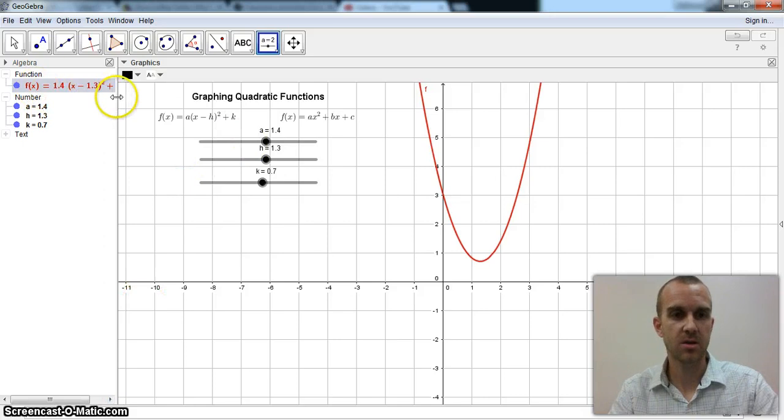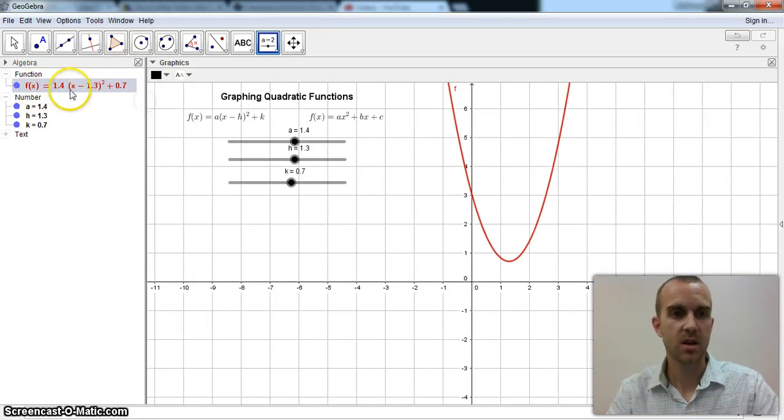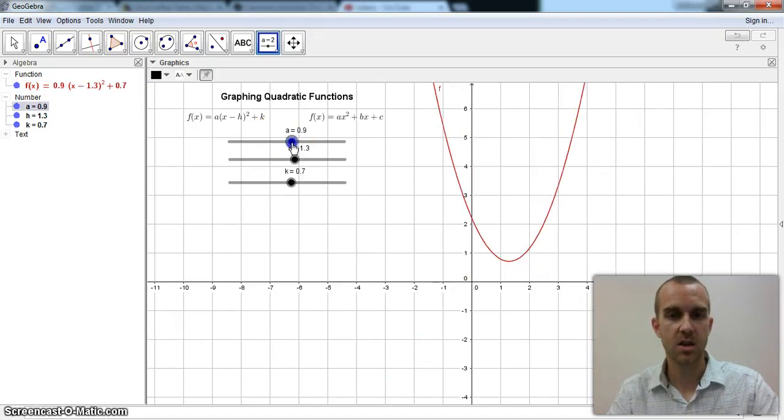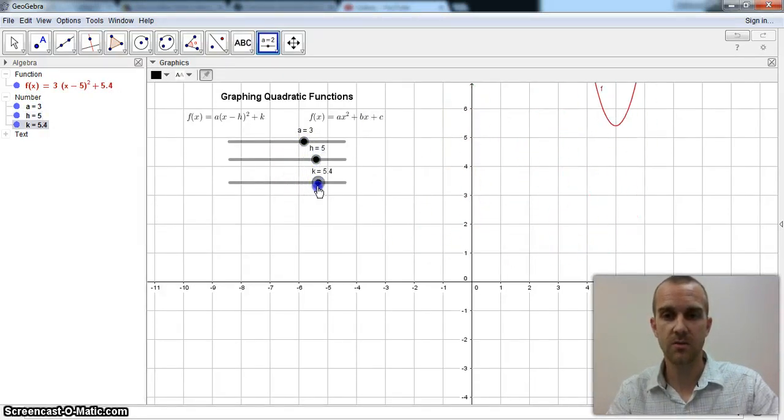And I can see here it constructed, I'll click and drag it so it's a little bit larger. It constructed my function. So now I can watch the a change the dilation. I can see how h does a horizontal translation and how k does the vertical translation.